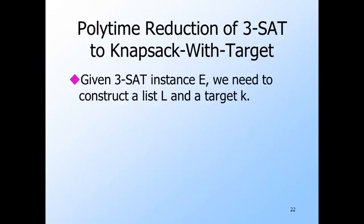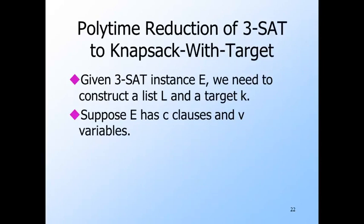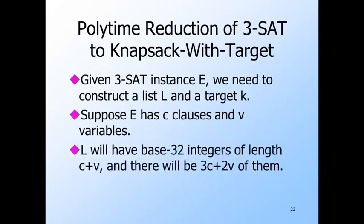We're going to reduce 3SAT to knapsack with target. Suppose we have an expression E in 3CNF. Let E have C clauses and V propositional variables. We're going to think of the integers in the list L we construct as written in base 32. We can write them in binary, so we need five characters per digit, but the factor of five is of no importance if we are only worried about performing the transduction in polynomial time. The length of each integer will be C plus V, so each integer could be as long as the entire expression E. There will be 3C plus 2V integers, meaning the length of the output could be on the order of the square of the length of the input — but that's okay, it's still a polytime transduction.